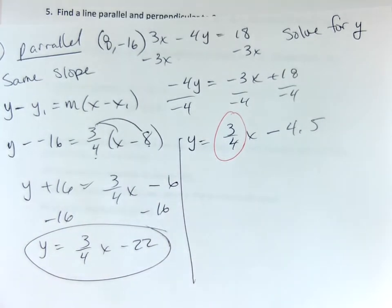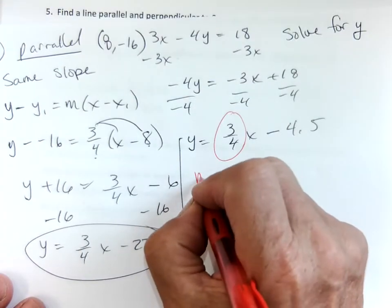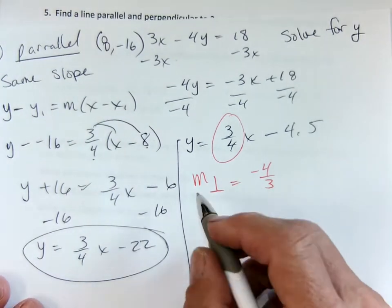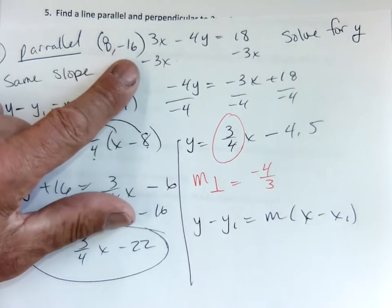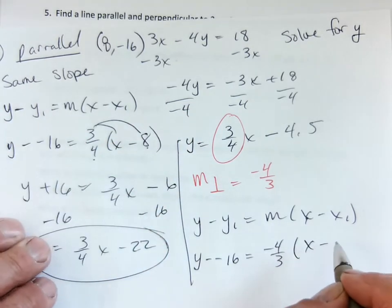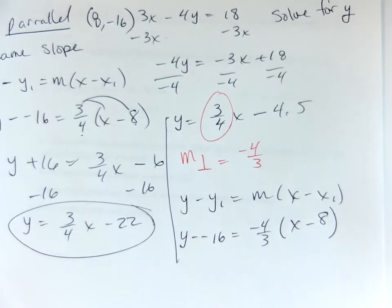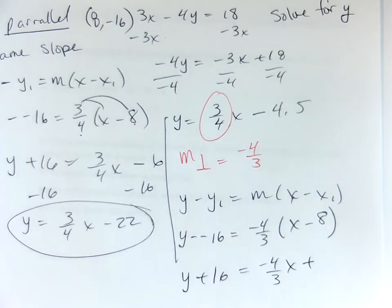Now, perpendicular, all we're going to do is the same process except we're going to take our slope and we're going to use the perpendicular slope, which is the negative 4 thirds, right? So, I'm going to use my y minus my y1 equals my m times my x minus x1. And I'll put my negative 16 again for y. Negative 4 thirds in for the slope. And I'll put in the 8 for the x, okay? I might get a decimal answer, but that's okay. I can deal with that.